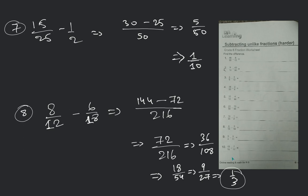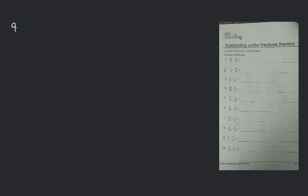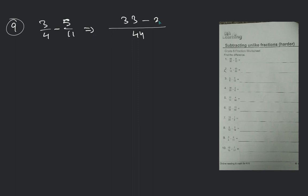Number 9: 3 by 4 minus 5 by 11. 44 will be the LCM. 11 into 3 = 33 minus 4 into 5 = 20. You will get basically 13 by 44. This will be your final answer — 13 by 44.